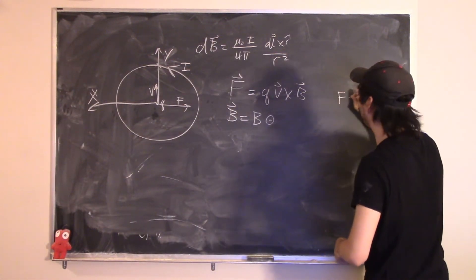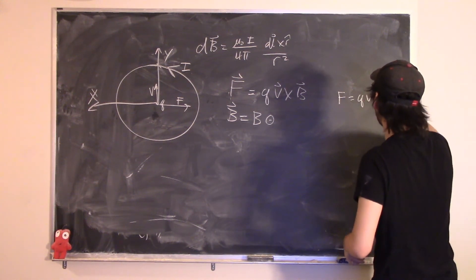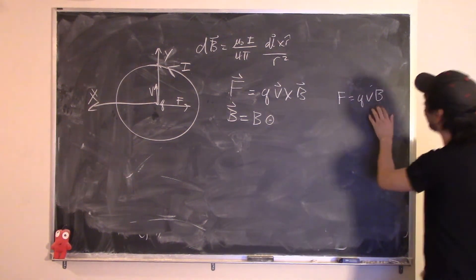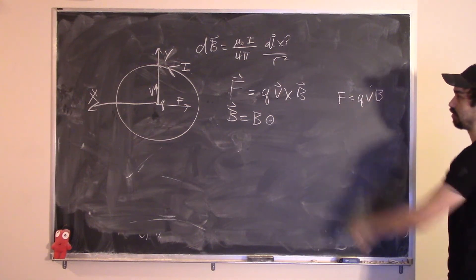Plugging into F = QVB: F equals Q V times mu-naught I divided by 2R. Solving for I gives I equals 2RF divided by (QV mu-naught).